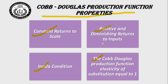The second property is positive but diminishing returns to inputs: the marginal product of capital and the marginal product of labor are positive but diminishing — they grow initially, reach a static point, then decline. The third property is the Inada condition: the marginal product of capital goes to infinity as capital approaches zero, and vice versa. This condition applies to both capital and labor.